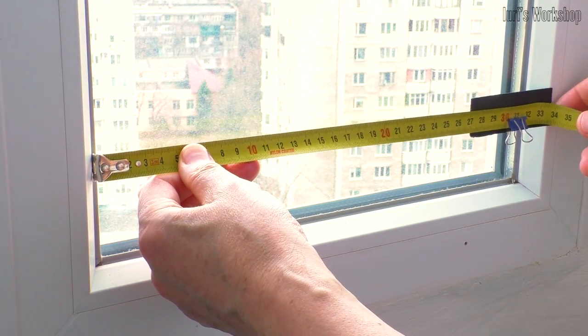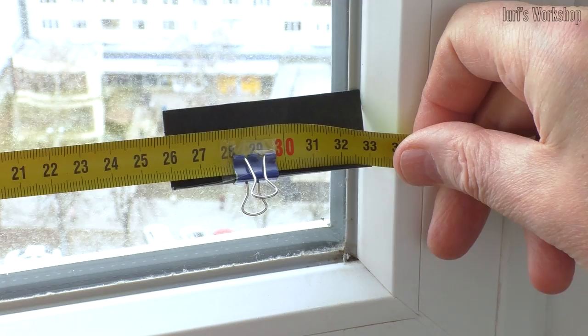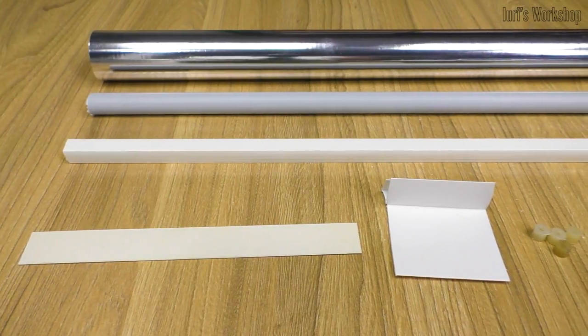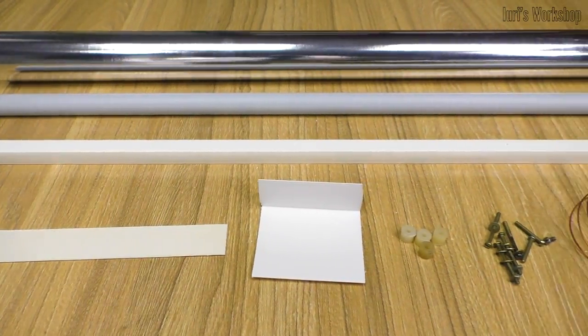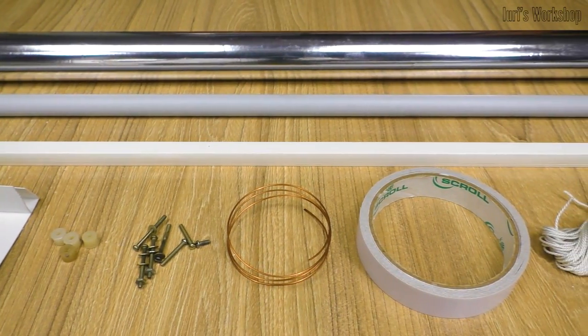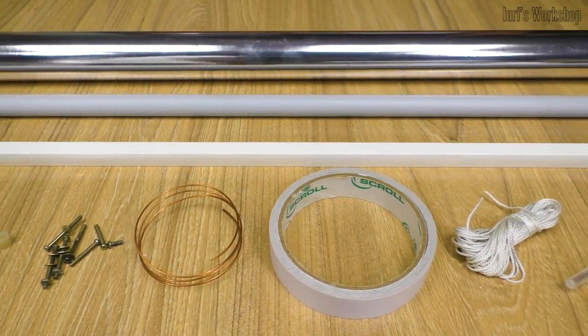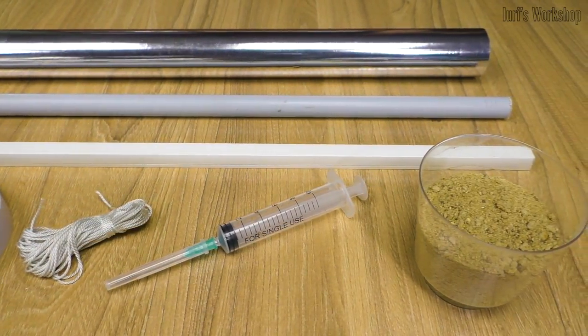Then I made accurate measurements to determine the amount of materials. I bought most of the source materials at a hardware store at ridiculous prices, so one square meter of these roller blinds cost me only $2-3.